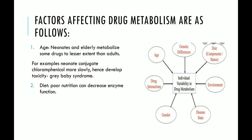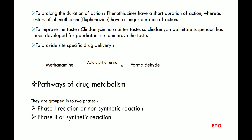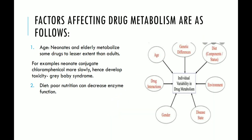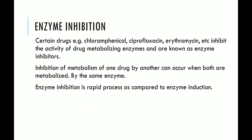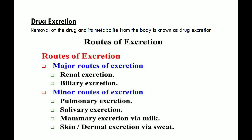Remember, important topics include prodrug, different pathways of drug metabolism — phase 1 and phase 2 reactions — factors affecting drug metabolism, and enzyme induction and inhibition. We are now done with drug metabolism. Next, we will see drug excretion — the removal of the drug and its metabolites from the body.